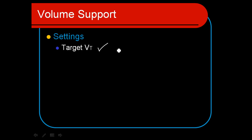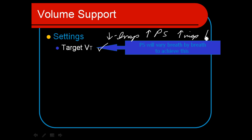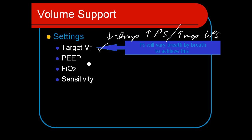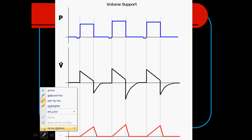We set our tidal volume target — quite often a modest physiological normal such as 500 or 600 mL. The pressure support will vary breath by breath to achieve this. Decreased inspiratory effort by the patient will cause increased pressure support; increased inspiratory effort or flows will cause the pressure support level to decrease. Of course we also set a level of PEEP and FiO2, and as always we set the sensitivity on the ventilator correctly.